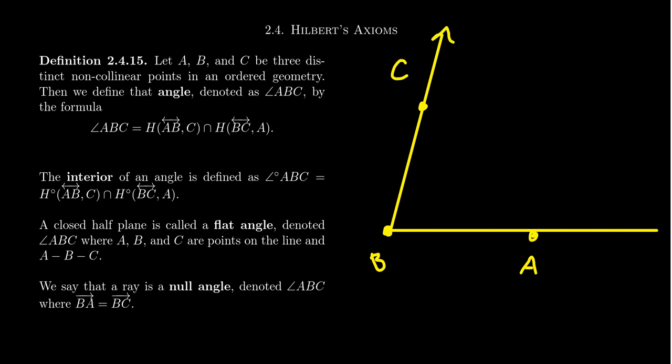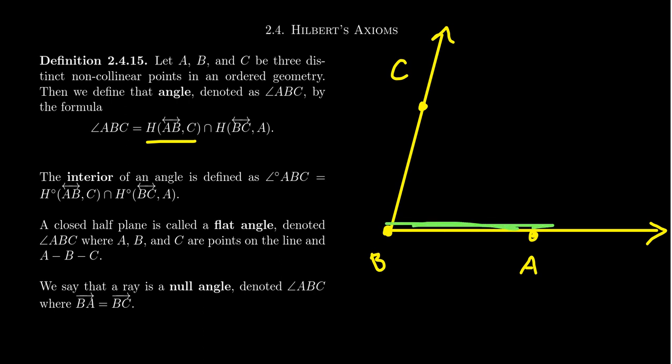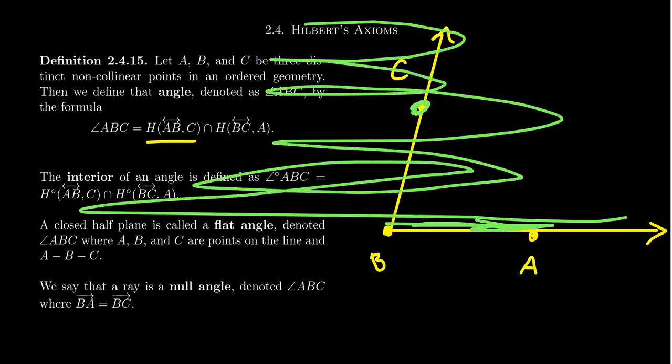So we know there's a line determined by these things. But when we think of the angle, we're really thinking of these two rays. But we also have everything inside the angle. The first part, you take the line AB. That is this line right here. And then take, there's two sides of the line that we've determined previously. Take the side that contains the point C. So we're taking this side of the line right here.